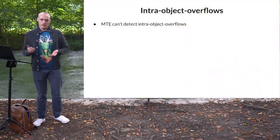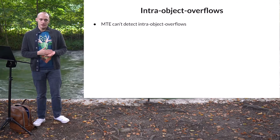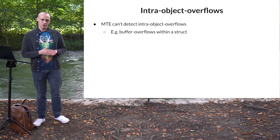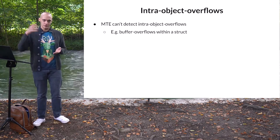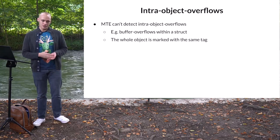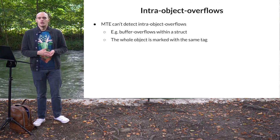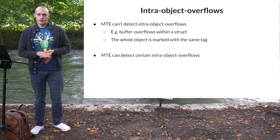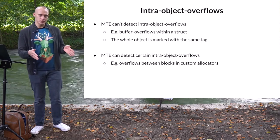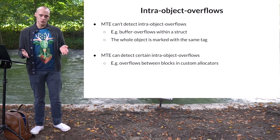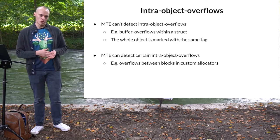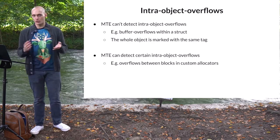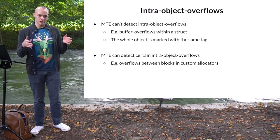Another type of bug that MTE does not stop is intra-object overflows — when a buffer overflow happens within a single allocated object. For example, a missing size check on an array field within a structure might allow overwriting the fields that follow it. MTE will not detect this as the whole structure will be marked with the same tag. However, there are certain types of intra-object overflows that MTE can help with — drivers and subsystems that allocate a chunk of memory and divide it into blocks for various purposes, implementing their own allocator. An overflow from one block to another is a bug, but MTE-based KASAN cannot catch it because it assigns the same tag to the whole allocated chunk.